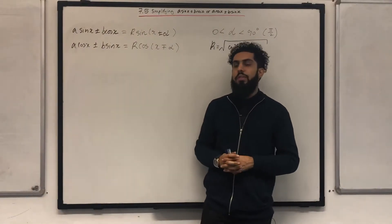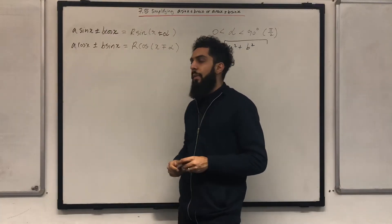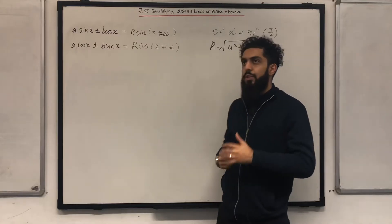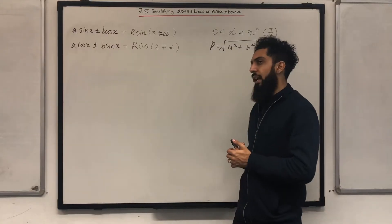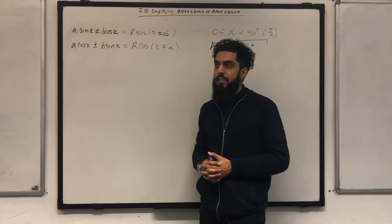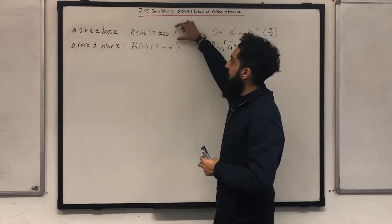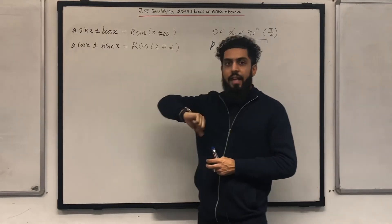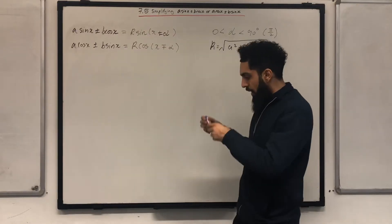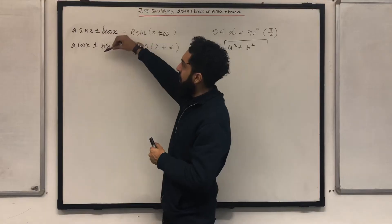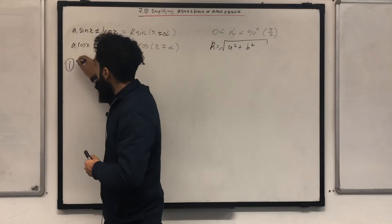Let's think about why we would express these trig expressions in this particular form. Suppose in the exam you're asked to sketch Y = 2sinX + 4cosX. Sketching that directly is challenging. But if you express it in the R sine form, the graph is easy to sketch — it's just the sine graph with some transformations applied. So the first reason is that you can easily sketch the graph.